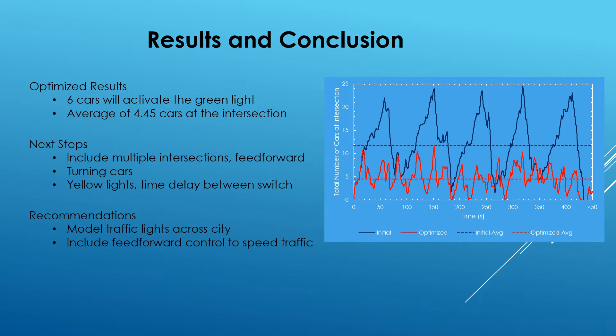The way we optimized the controller was by manipulating the trigger value. We used a sensor for the number of cars on the north and south sides of the intersection as the basis for our controller. We determined that with an activation point of six cars on the north and south sides, that gives the minimum average number of cars at the intersection. The high points on our graph show the unoptimized parameters — about 20 cars before activation. Changing it to six cars dropped the average to 4.45 cars at the intersection at any given time.